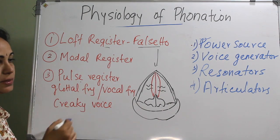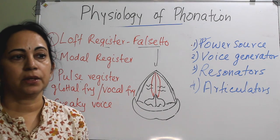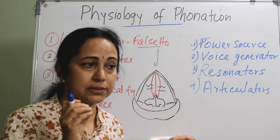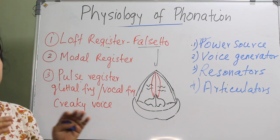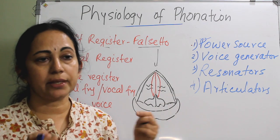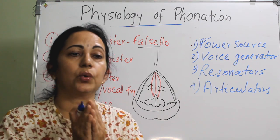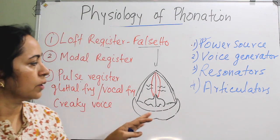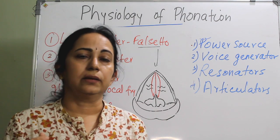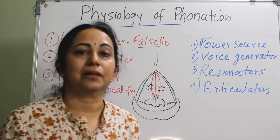The lowest register is the pulse register — also called glottal fry, vocal fry, or creaky voice. This terminology represents the pulsed nature of laryngeal phonation. Here the laryngeal vocal fold cover and the muscle move as a single unit, and the closed phase of the vibratory cycle is the longest. It is popularized in singing by Chris Cornell, and in speech by Britney Spears and Kim Kardashian.